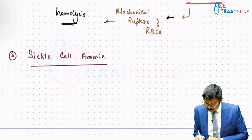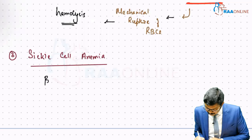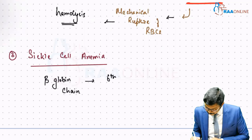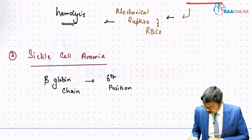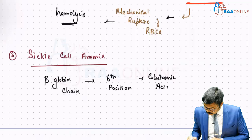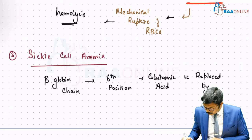Sickle cell anemia is something you would have studied very well. It's a simple disorder where in the beta globin chain, at the sixth position, where there must be glutamic acid, this glutamic acid is replaced by another amino acid called valine.